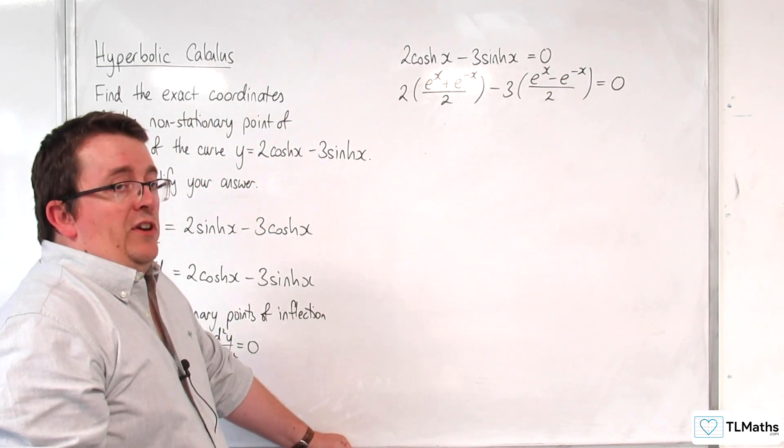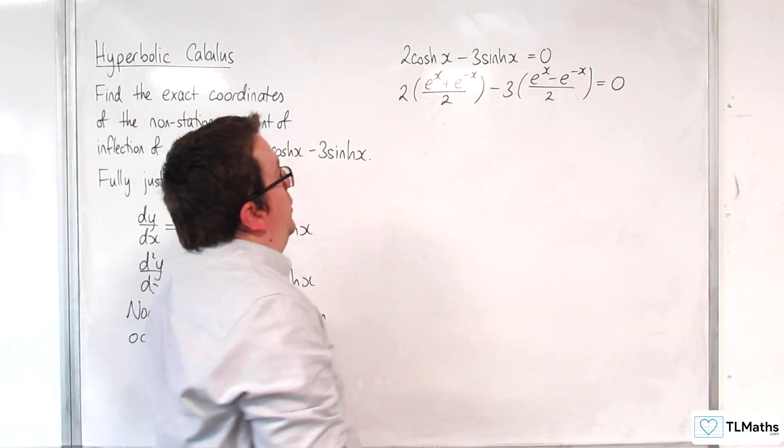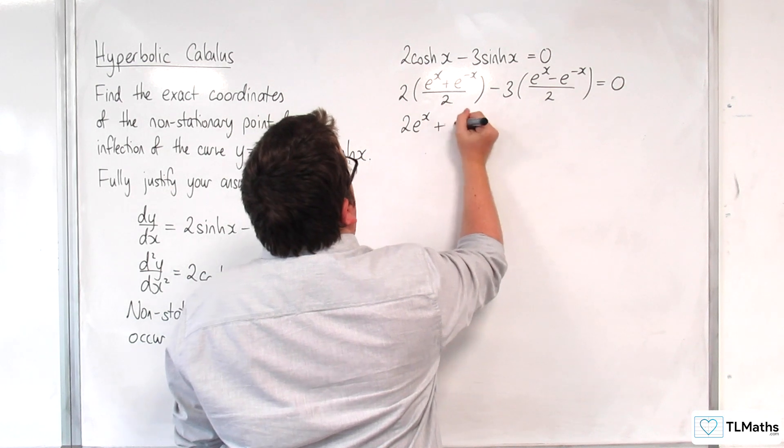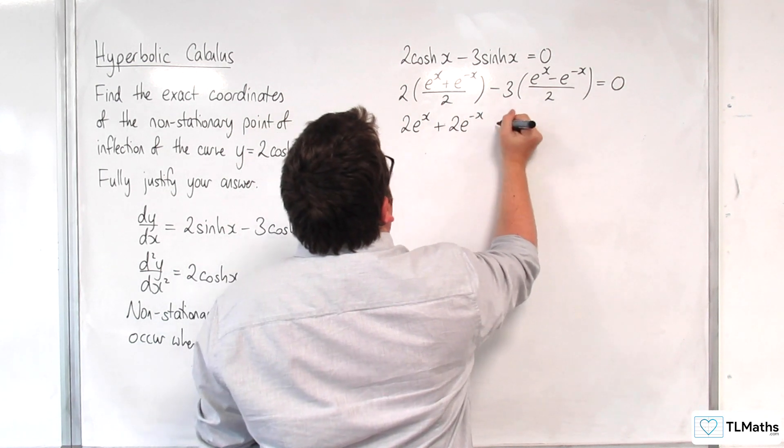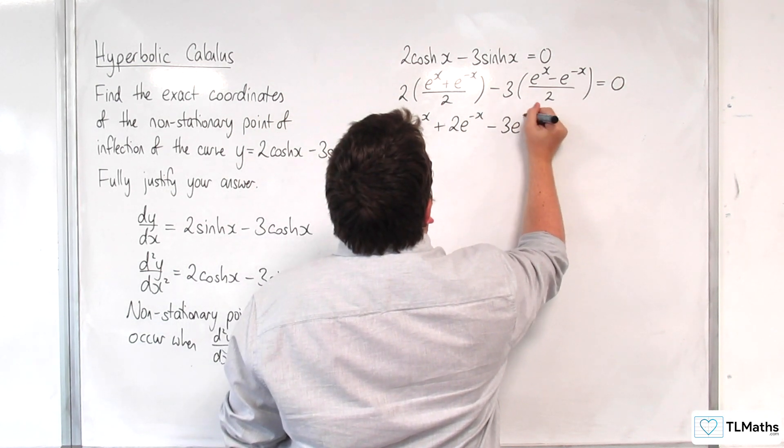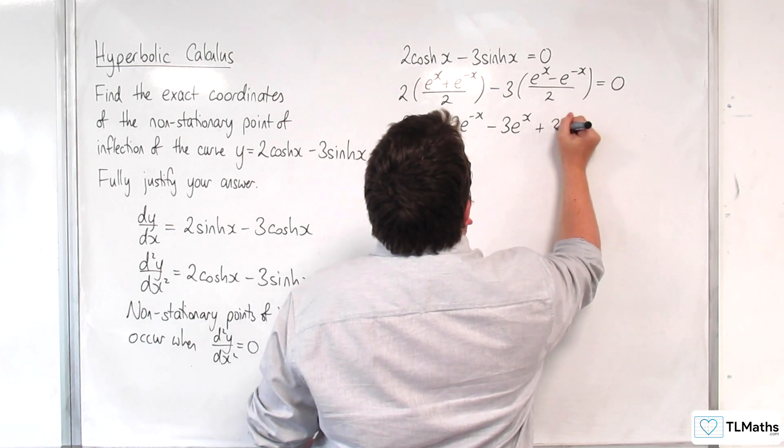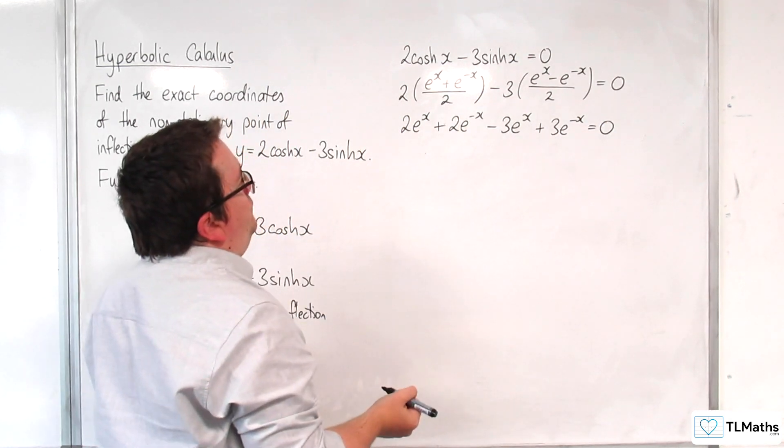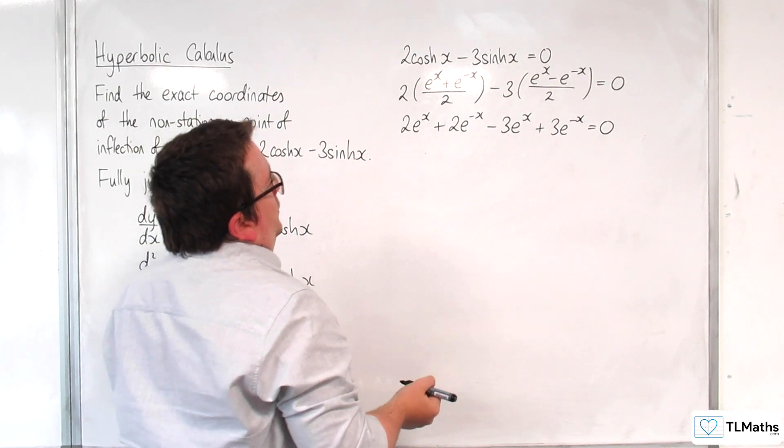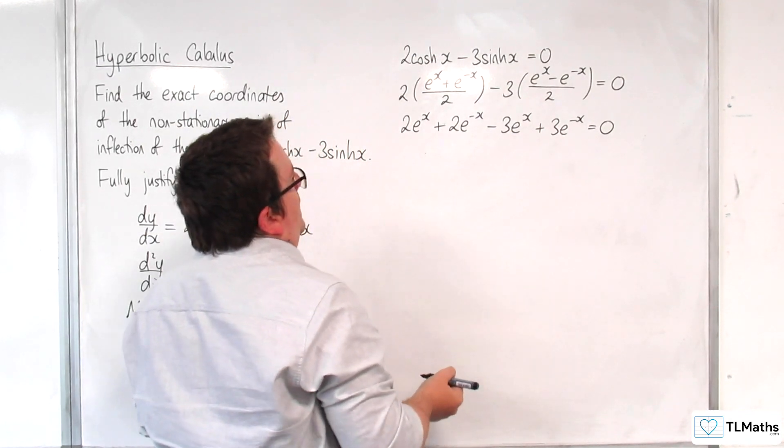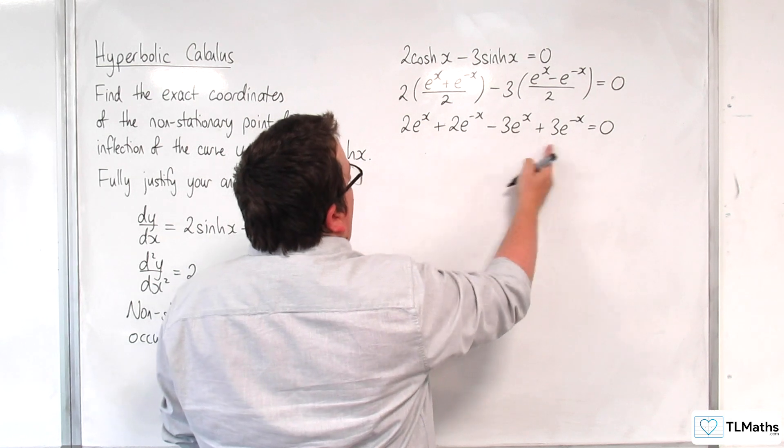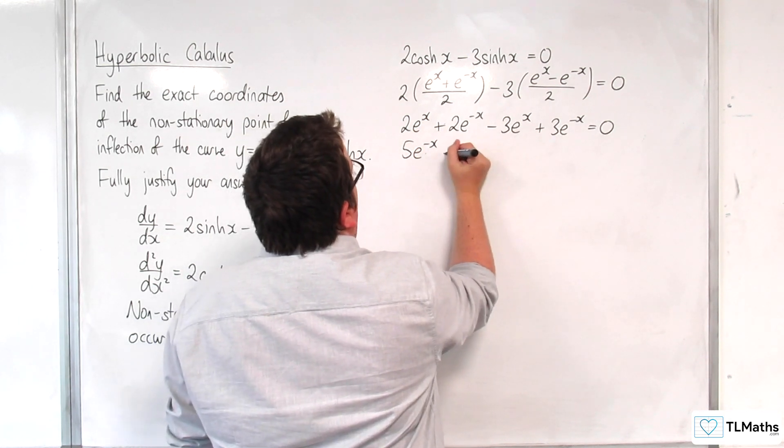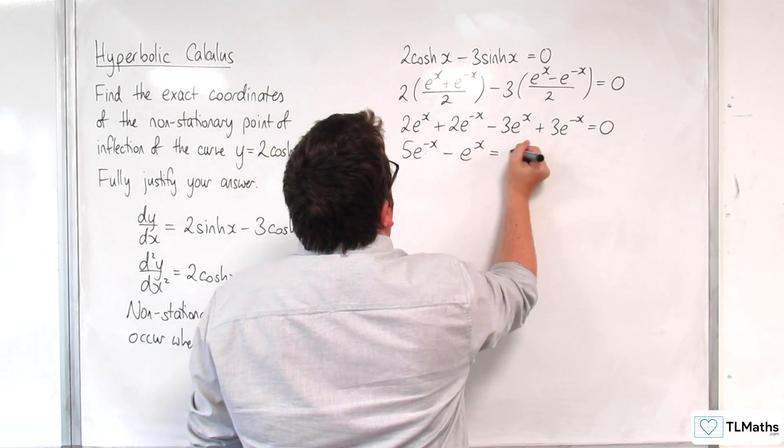So what I can do is I can multiply through by 2, and I would be left with 2e^x plus 2e^(-x) take away 3e^x plus 3e^(-x) equals 0. So now what I have is 5e^(-x) take away e^x is equal to 0.